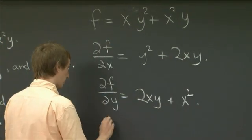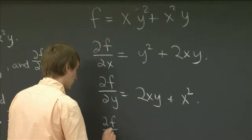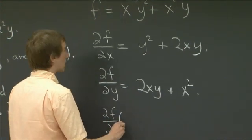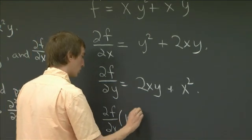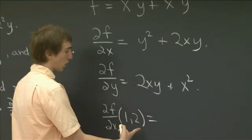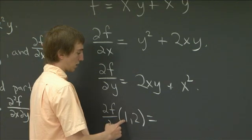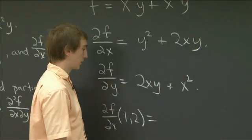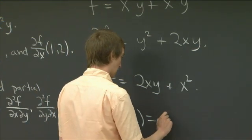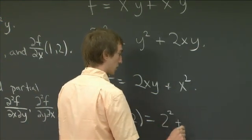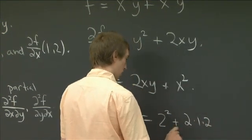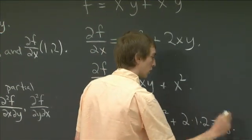And then the final thing that we need to do is we want to evaluate ∂f/∂x at the point (1, 2). And so all that means is that we have to plug in x equals 1 and y equals 2 to our previous computation. And so we get 2² plus 2 times 1 times 2. So all together, we get 8.